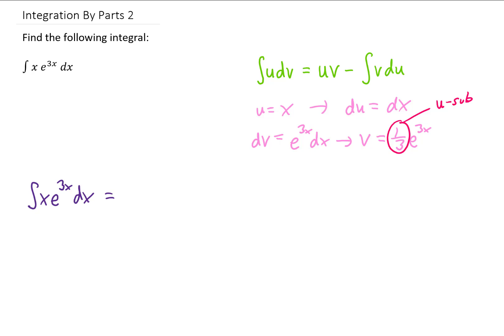But for this problem, I'll just copy the original integral down, and then using the integration by parts formula with the u's and the v's and the du's that we just found, we end up getting something that looks like this.